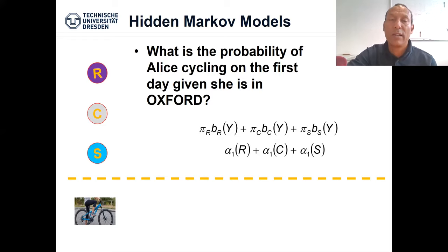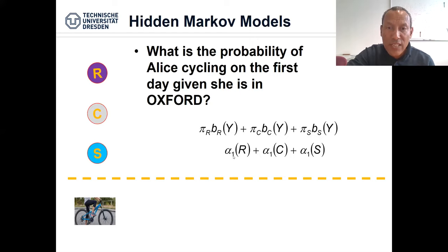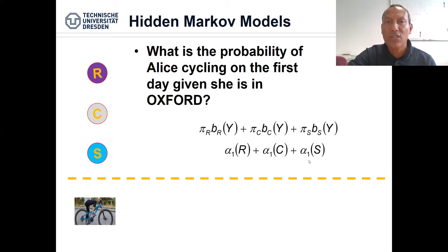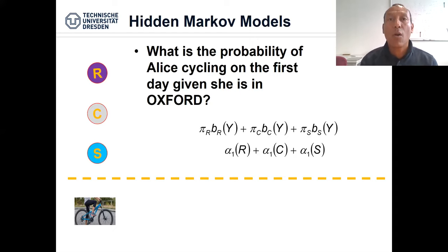We may wish to know the probability that Alice cycles on the first day given she is in Oxford. Since we don't know the weather, she could have cycled when it was raining, cloudy, or sunny, and we have to add all these possibilities. We represent the joint probability of being in state r on the first day and observing this symbol as α_1(r), and similarly α_1(c) and α_1(s), and add them all to determine the probability of Alice cycling in Oxford on Monday.